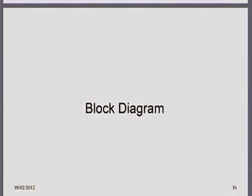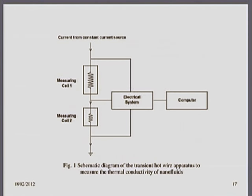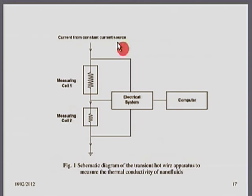The next thing is a block diagram. Going back to our experimental sketches, a block diagram should contain only the essential blocks and should not have any clutter. Notice here the essential blocks of two measuring cells, electrical system, and the computer which manages the whole thing are shown. Current from a constant current source — that is out of the block diagram. The block diagram has not been made cluttered by showing how the constant current source is created or what the original source of power is.